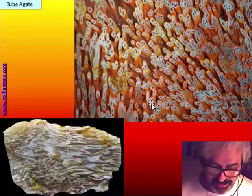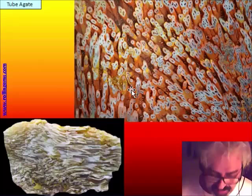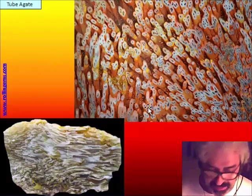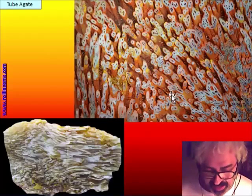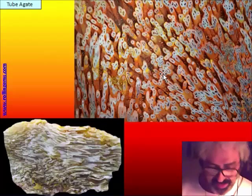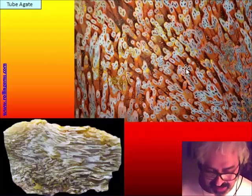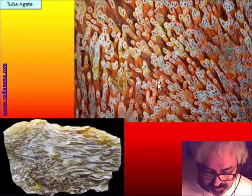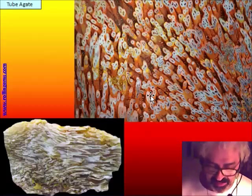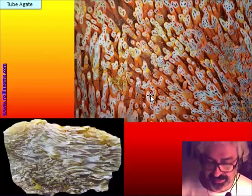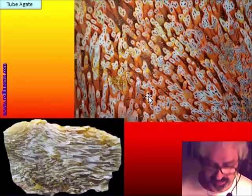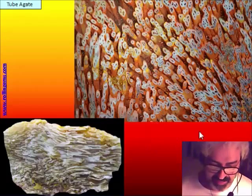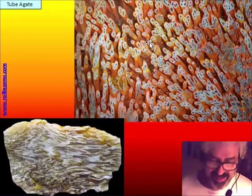This is a very common case. The same thing is seen in tube agate, where the tube is made of chalcedony but inside we see the filament. The filament is made of a kind of mineral — in this case it is dark — but around the filament there is the first polymerization, which is the first hardening of the chalcedony around the filament.